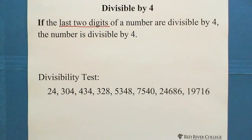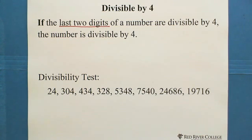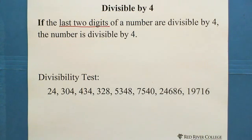We know 4 equals 2 times 2. So we can predict: if a given number is odd, you don't need to worry about it, because an odd number is not divisible by 2 and also cannot be divisible by 4. So only even numbers are possible. But even for even numbers, we still need to look at the last two digits to see if it is divisible by 4.